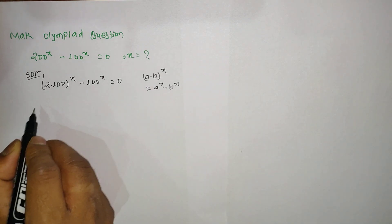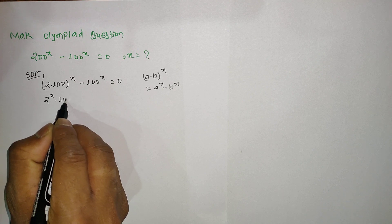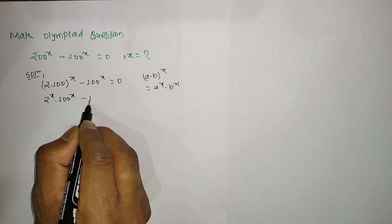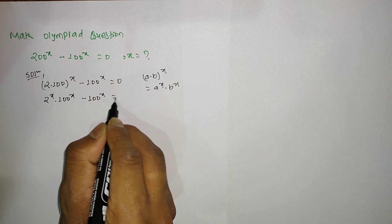So in the same form we can apply here: 2^x × 100^x - 100^x = 0.